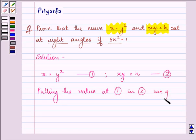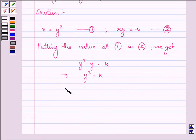Putting the value of equation 1 into equation 2, if we substitute x as y squared in the second equation, we have y squared times y equals k, which implies y cubed equals k, giving us y equals k raised to the power 1/3.